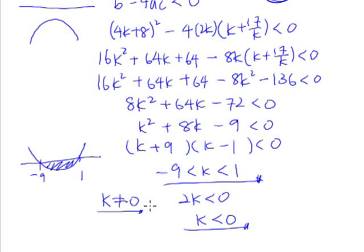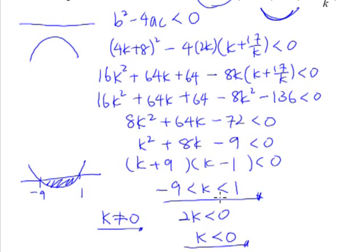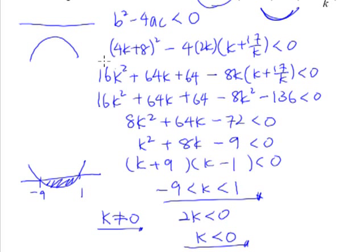Now, satisfying the discriminant condition alone only guarantees us that b² − 4ac < 0, meaning no real roots. It doesn't guarantee that we have a negative x² coefficient and therefore a maximum curve. So our k has to satisfy the condition k < 0 as well to make it a maximum curve in the first place.